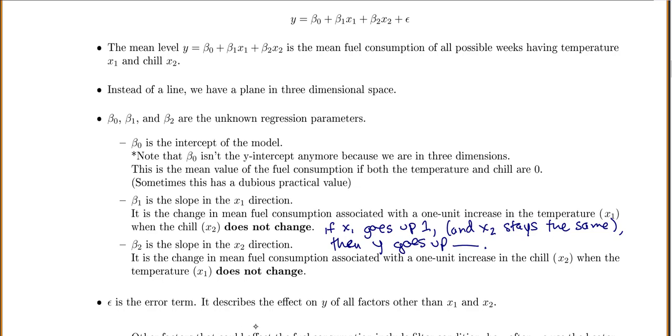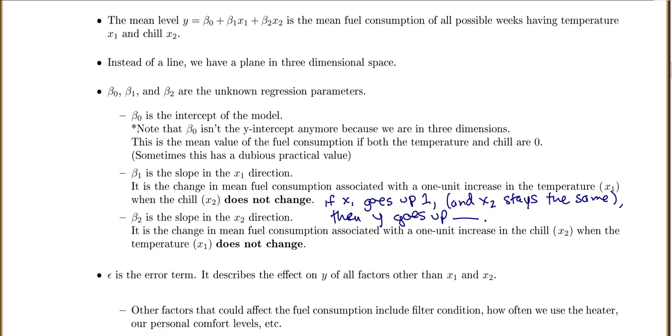And then for beta 2, that's the slope for our second variable. And it will be the exact same thing just for chill instead. So it will be the change in our mean fuel consumption if chill goes up 1 and the temperature does not change. So when we interpret the slope, we can only interpret it kind of one variable at a time. And again, epsilon is our error term.